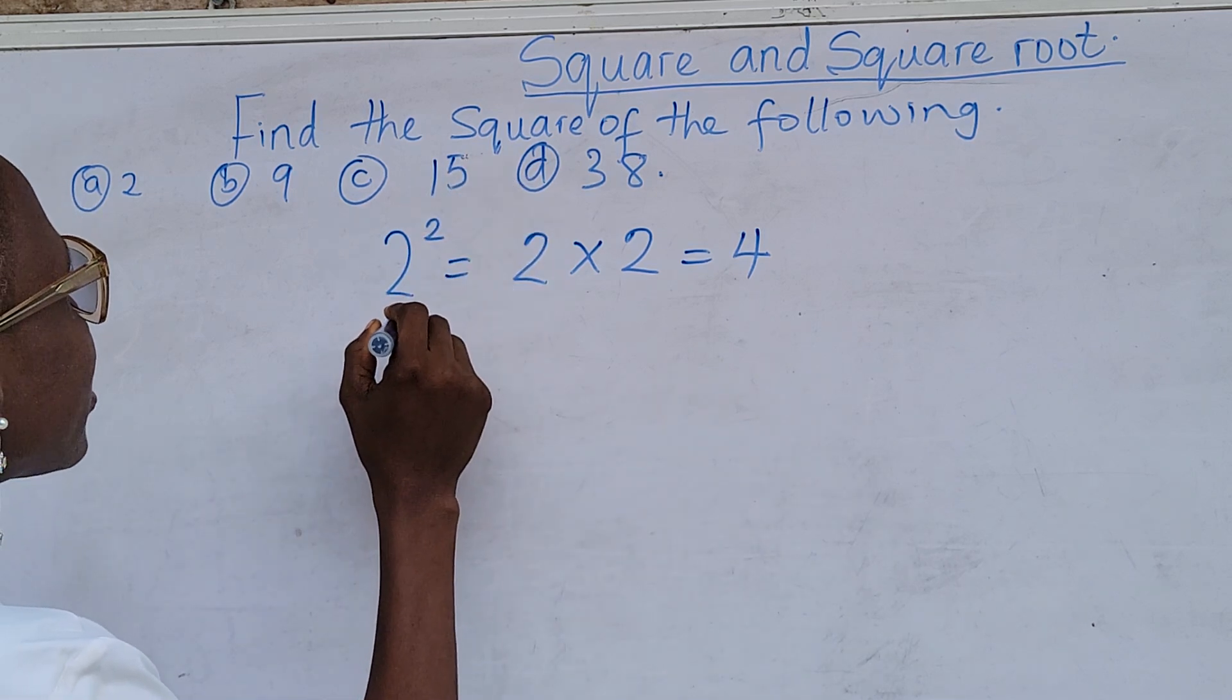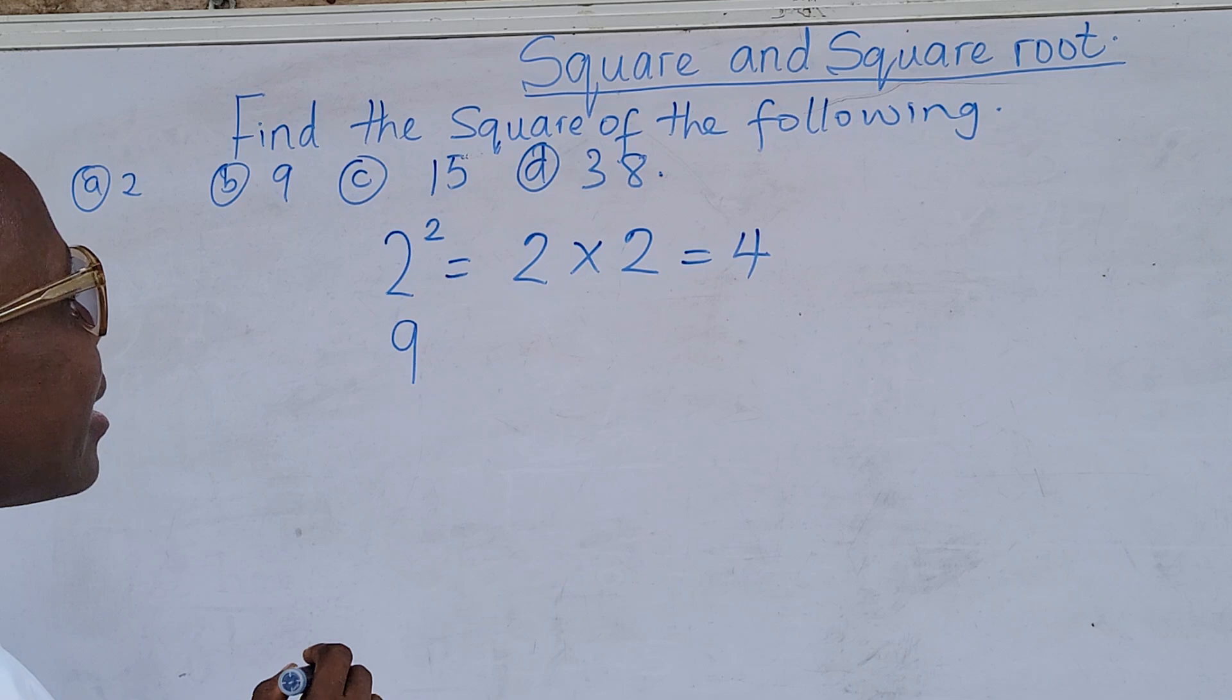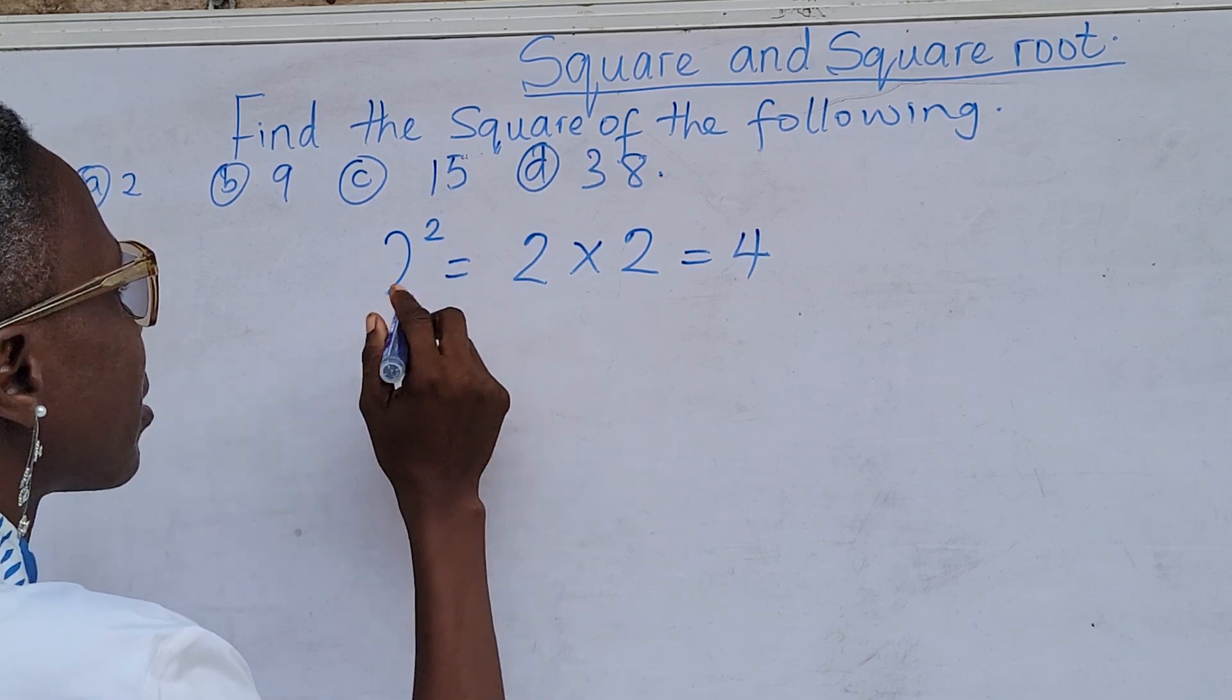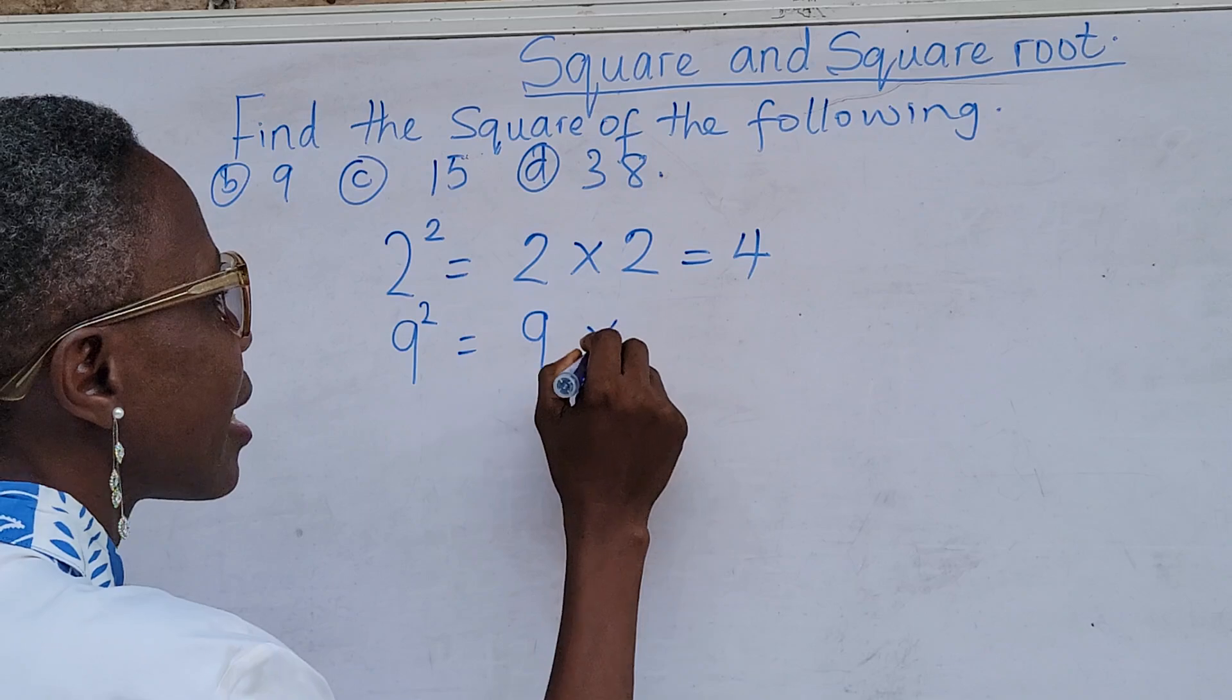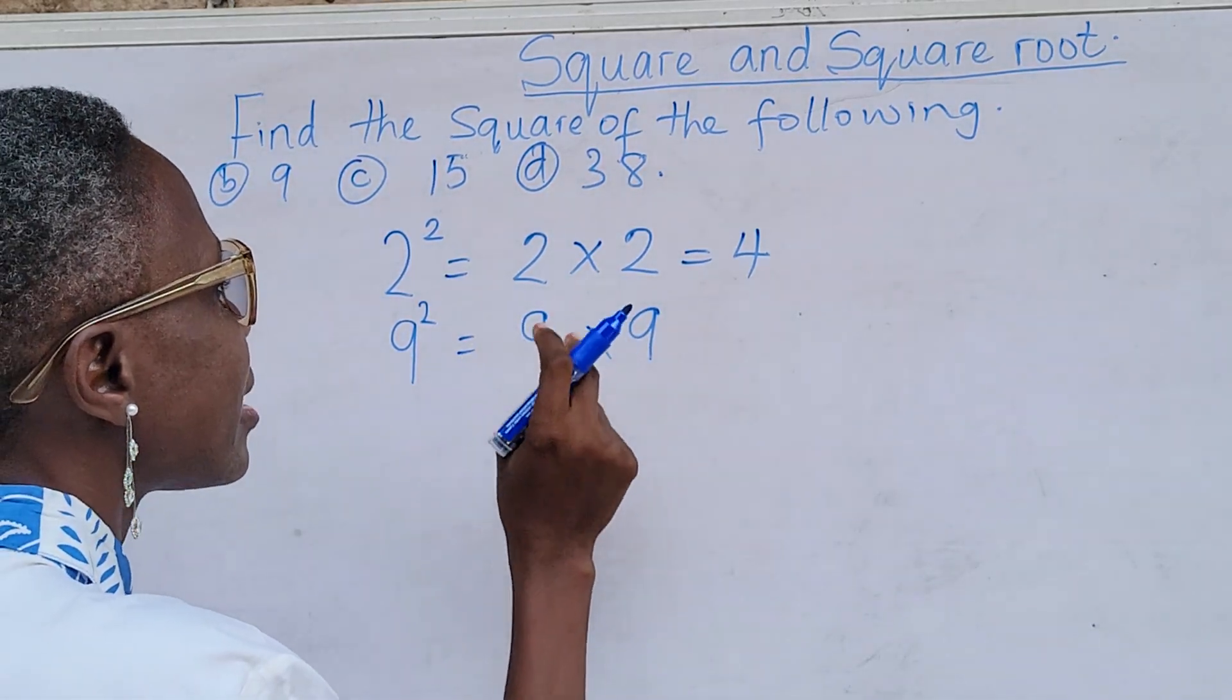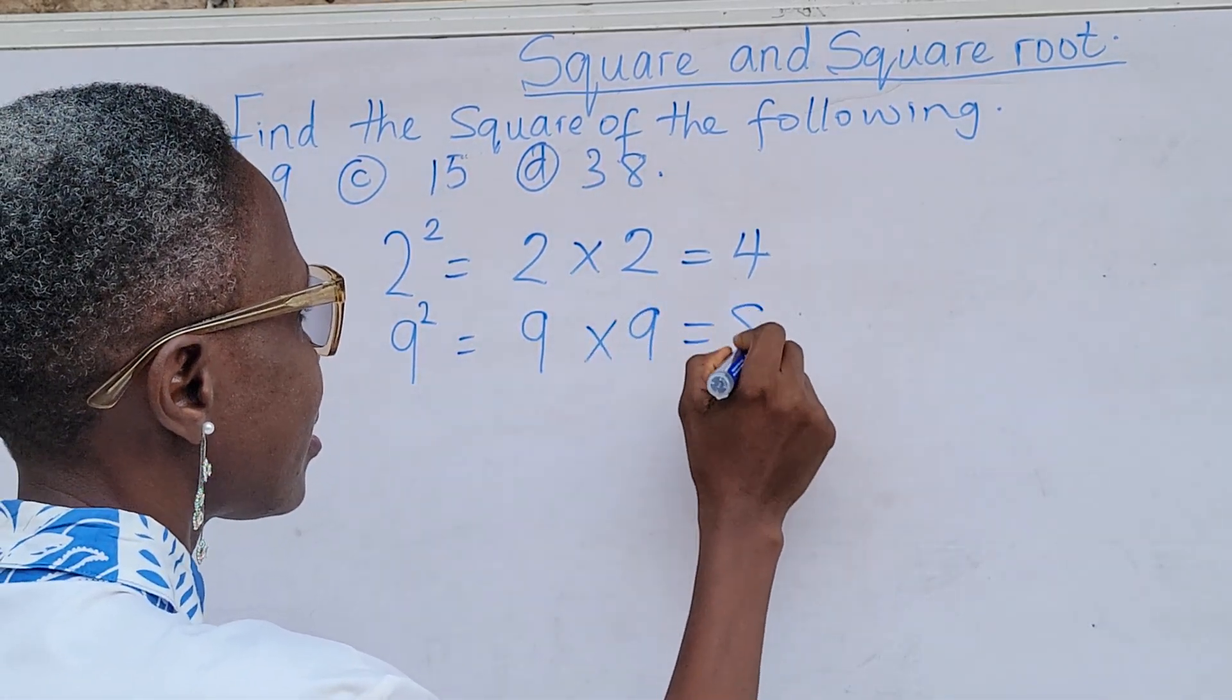The second one is 9, which means 9 raised to the power of 2, which means I am multiplying 9 by itself. 9 times 9 is 81. So the square of 9 is 81.